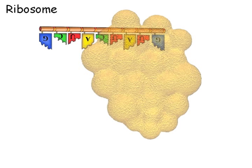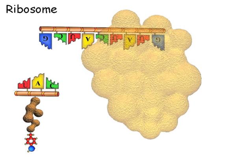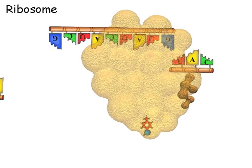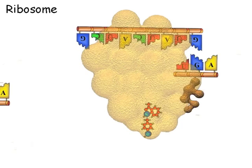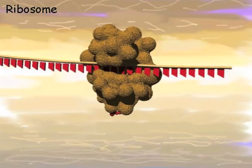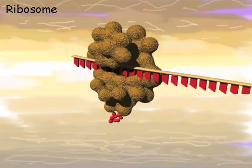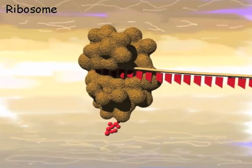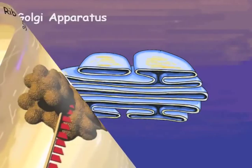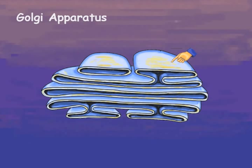Now let's watch it in action. The virus sub-assemblies are trucked to the Golgi apparatus. Here the viruses are assembled, inspected, and stored.